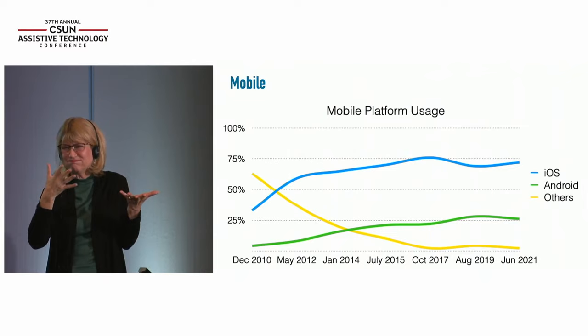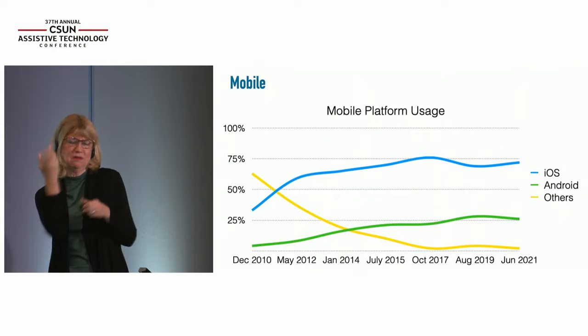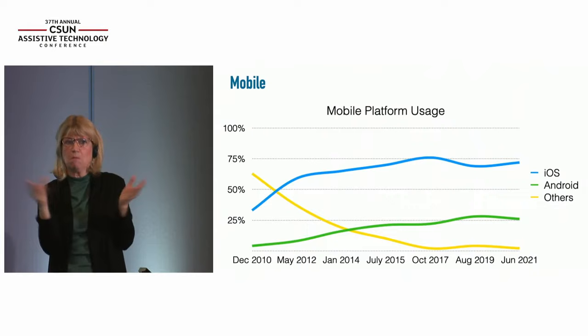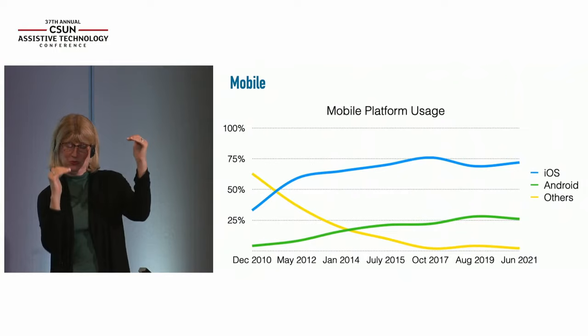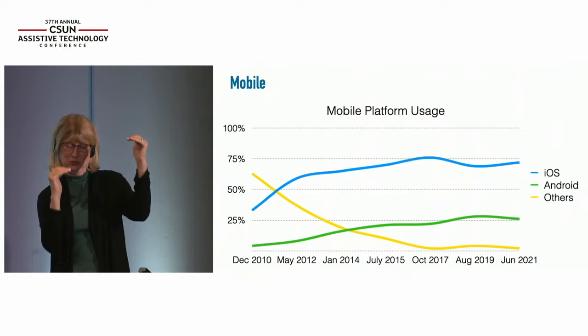We also look at mobile usage, and the short version is that iOS really totally dominates among screen reader users. Adoption of iOS devices is significantly higher among this population than the overall population, although we have seen that level out and even come down a little as Android has increased in usage.